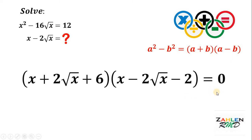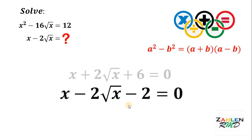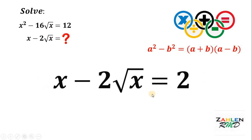And since it is equal to 0, at least one of them must be equal to 0. Therefore, we can say that x plus 2 times square root of x plus 6 equals 0, or x minus 2 times square root of x minus 2 equals 0. Our goal is to solve for the value of x minus 2 times square root of x, and we have that expression in our second equation. So we will use the second equation. To solve for the value of x minus 2 times square root of x, we need to add 2 on both sides. Thus, x minus 2 times square root of x must be 2.